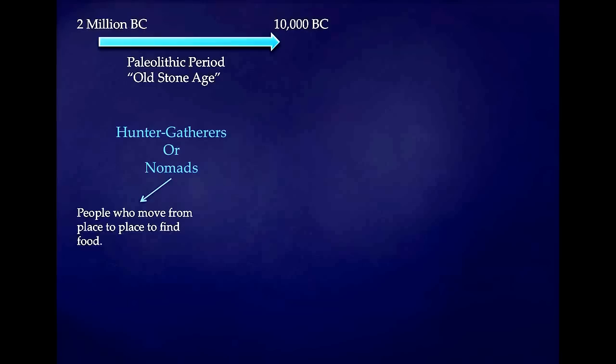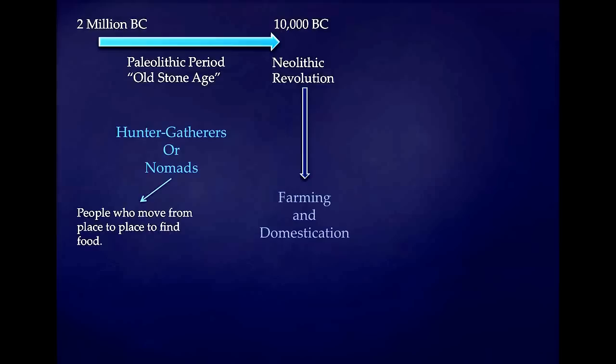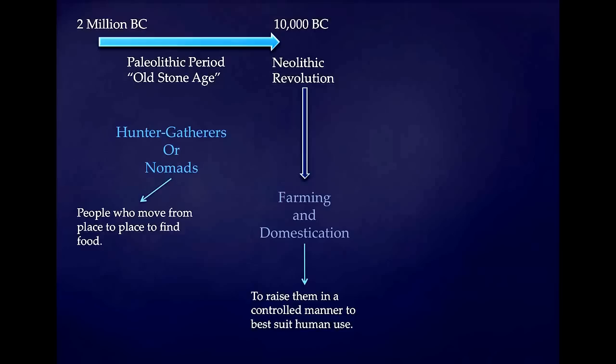Around 10,000 B.C., there's going to be a dramatic change — this is known as the Neolithic Revolution. What happens is people learn how to farm and domesticate. Domestication is simply to raise something in a controlled manner to best suit human use. Farming is the domestication of plants and crops, while the domestication of animals means either using them for work or raising them to eat. When people learn how to farm, they can begin establishing permanent settlements, villages, and towns.